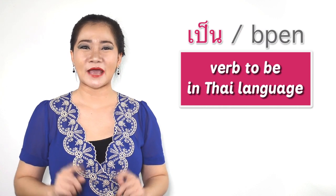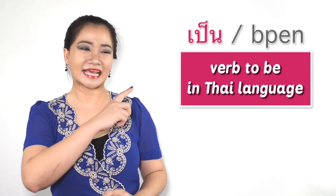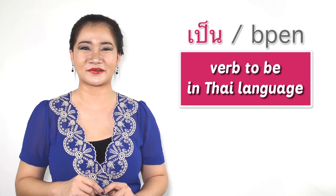What is เป็น? เป็น is verb to be in Thai language. If you missed the episode of เป็น, click right here to learn more about it. On this episode, you will learn new vocabulary. Ready? Let's get started.